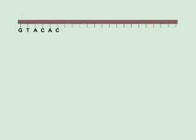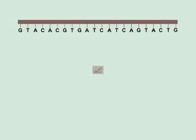A single strand of DNA can alphabetically be sequenced by the letters A, C, T and G.